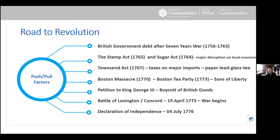As things ramped up with the Stamp Act and the Sugar Act — increased taxation on the colonies from the British government — this had a major disruption on the local economy. The Townshend Act of 1767 taxed major imports: paper, lead, glass, and tea, affecting pretty much every aspect of colonial society. Things came to a head in Boston with the Boston Massacre in 1770, where civilians were killed protesting in the streets. The Boston Tea Party — an attempt to destroy British tea rather than pay tax on it — was carried out by a group called the Sons of Liberty.